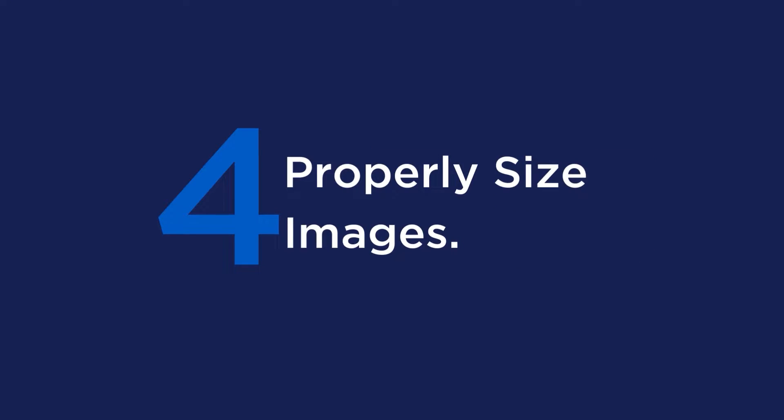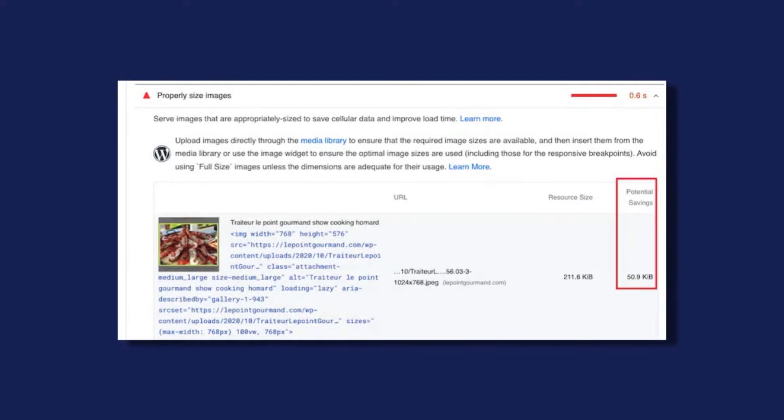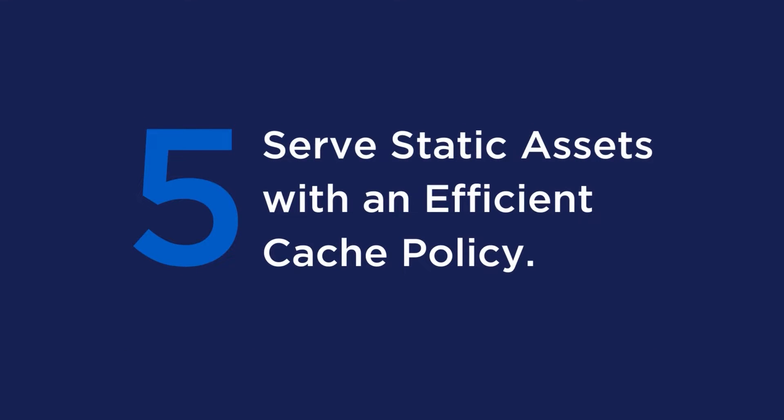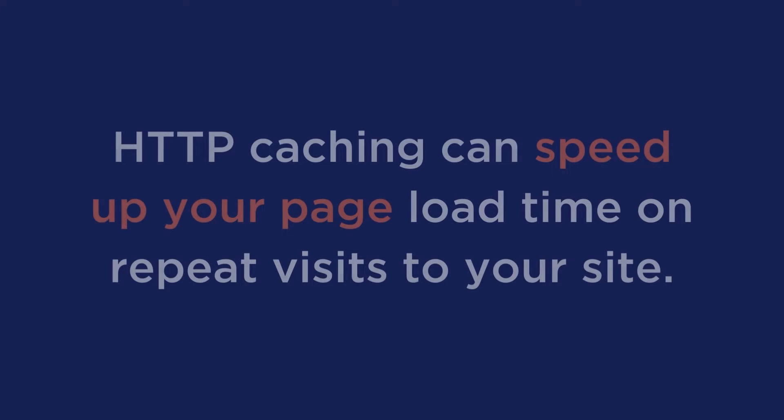Number three is to defer off-screen images. An additional way to optimize images for performance is to apply lazy loading to images below the fold — the goal is to prioritize critical resources first and load hidden images later. Number four is to properly size images. Google recommends properly sizing images especially when serving them on mobile devices. In this screenshot, I could save 50 kilobytes by resizing and optimizing my image for mobile devices.